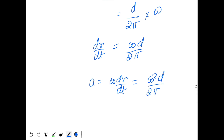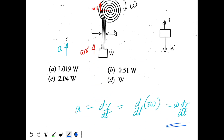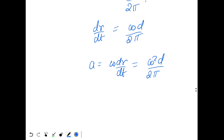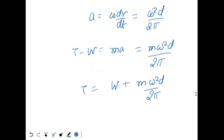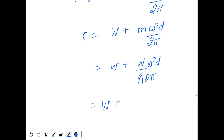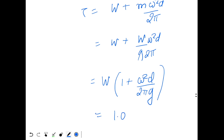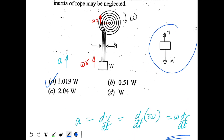The acceleration is a = ω·(dr/dt) = ω²d/2π. Applying Newton's second law: T − W = ma = m·ω²d/2π. Since m = W/g, tension becomes T = W(1 + ω²d/2πg). Substituting the values gives T = 1.019W, so option A is the answer.